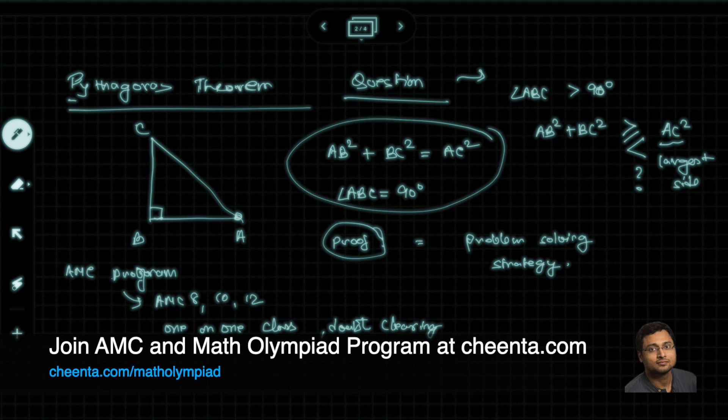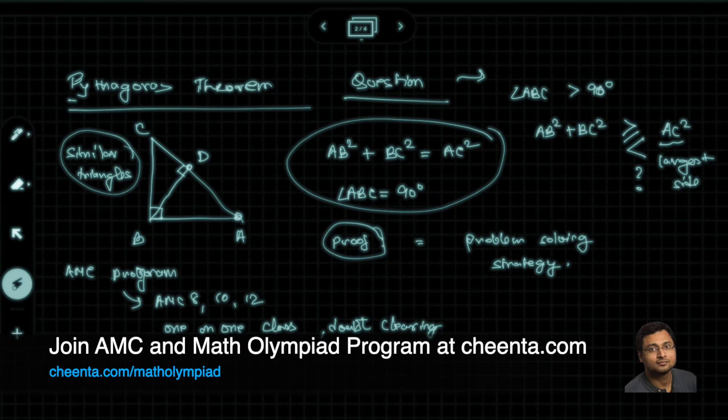One of the hints is that you can drop a perpendicular from B on the hypotenuse AC. Let's call this point D. And then you can use similar triangles to prove this. So if you are a child and if you do not know how to prove this, this will be a great opportunity for you to give it a try.